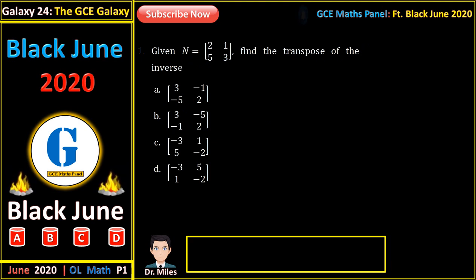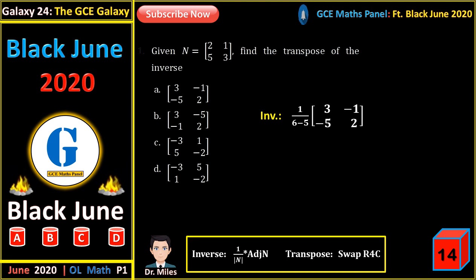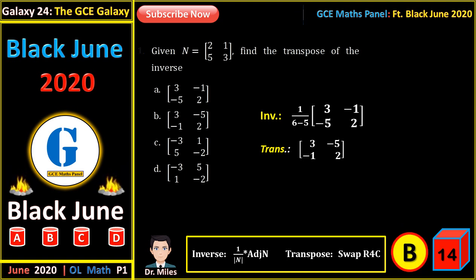A jar contains 1000 sweets and 20% of the contents are removed after every 15 minutes. How many sweets will have been removed in 45 minutes? In 45 minutes there will be 3 removals, each corresponding to 80% left. The final amount remaining is 0.8 to the power 3 times 1000, giving 512 sweets. The amount removed is 1000 minus 512, which is 488.